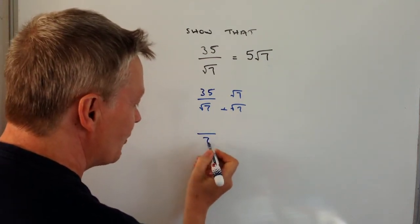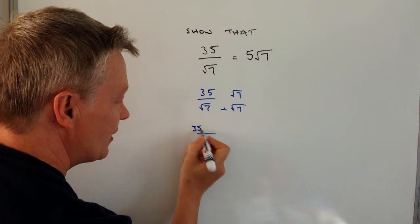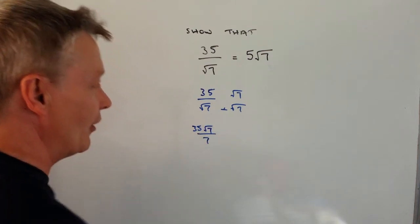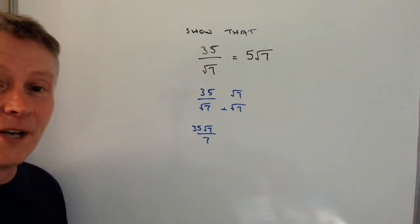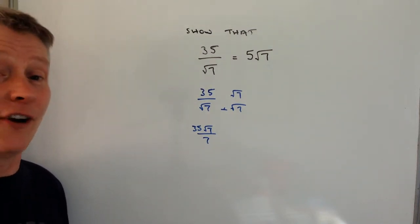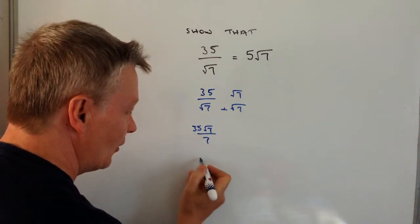So at the bottom I end up with 7 and at the top I end up with 35 times root 7. Well 35 times root 7 divided by 7 means that if I divide further by 7 I can then cancel this out.